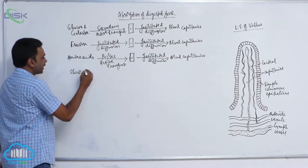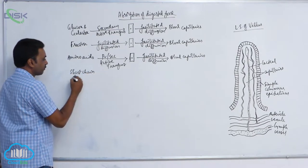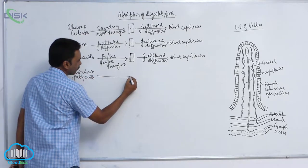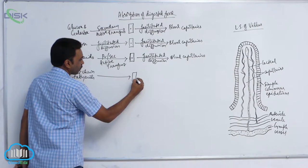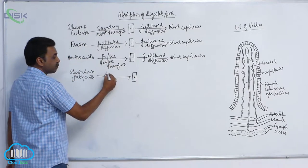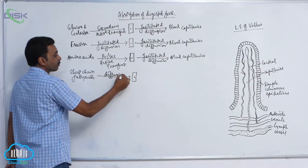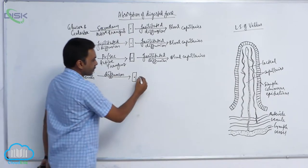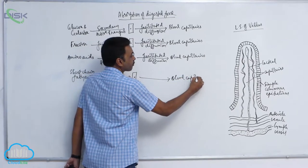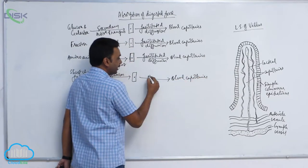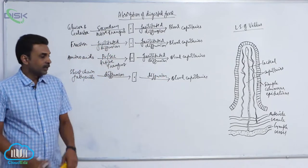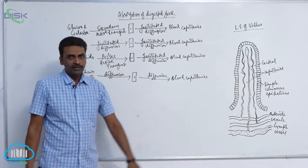Short chain fatty acids enter into epithelial cells by simple diffusion, and they also enter into blood capillaries by simple diffusion only.